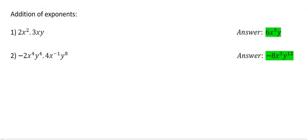Ready to try some examples? Well, let's look at number 1. So what we do is we see the 2 and the 3, they are not exponents. So they just multiply together and that's going to give us 6.